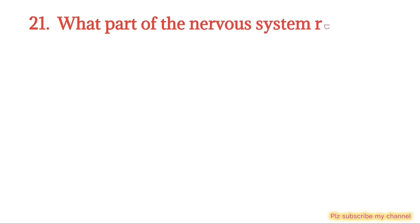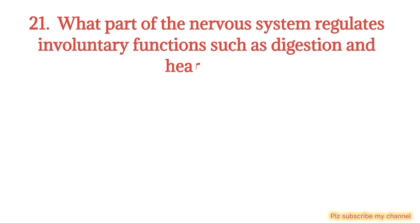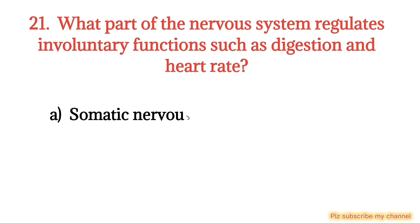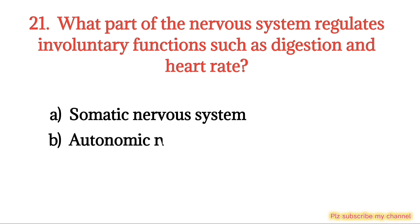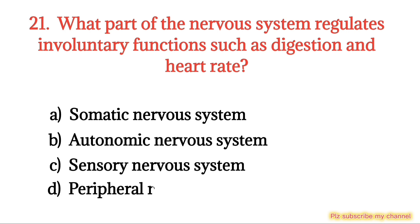MCQ number 21. What part of the nervous system regulates involuntary functions such as digestion and heart rate? Option A: Somatic nervous system. Option B: Autonomic nervous system. Option C: Sensory nervous system. Option D: Enteric nervous system. The right option is Option B.